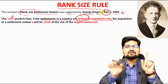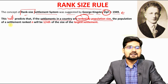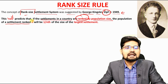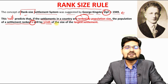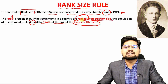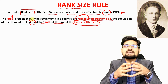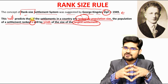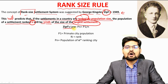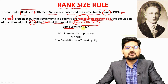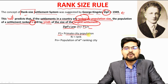As in the primate city, we talked about population size in terms of the primacy index. Here, the population of a settlement ranked n will be 1/n of the size of the largest settlement. In terms of statistical method in geography, the formula to understand Zipf's law is: Pn = P1 / n.